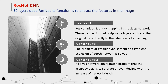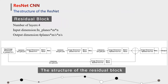One advantage of ResNet is that the problem of gradient vanishment and gradient explosion of deep networks will be solved. The second advantage is that it solves the network degradation problem where accuracy begins to saturate or even decline with an increase of network depth. Now let's see the structure of the ResNet. I will introduce the ResNet-Block. In the setting, C is the channel number of the output, K is the kernel size, P is the padding size, S is the stride, and the total number of layers is 4. The input dimension is inplanes × m × m and the output dimension is 4 × planes × (m/s) × (n/s).